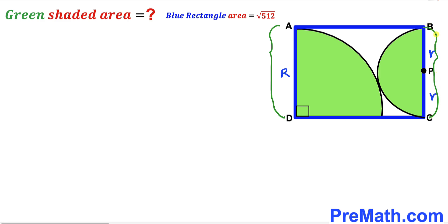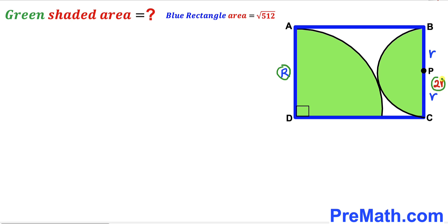We know that side BC is going to be lowercase r plus lowercase r, giving us 2 times lowercase r. Therefore, uppercase R is going to be equal to 2 times lowercase r.